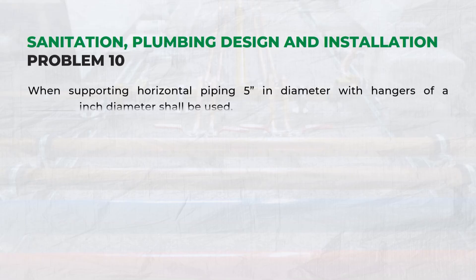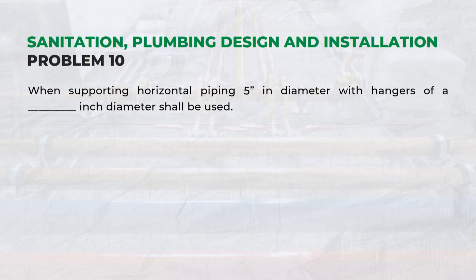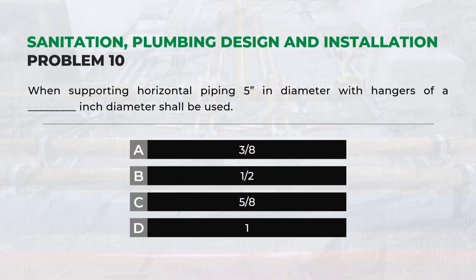When supporting horizontal piping 5 inches in diameter, hangers of what diameter shall be used? Answer: B. One Half.